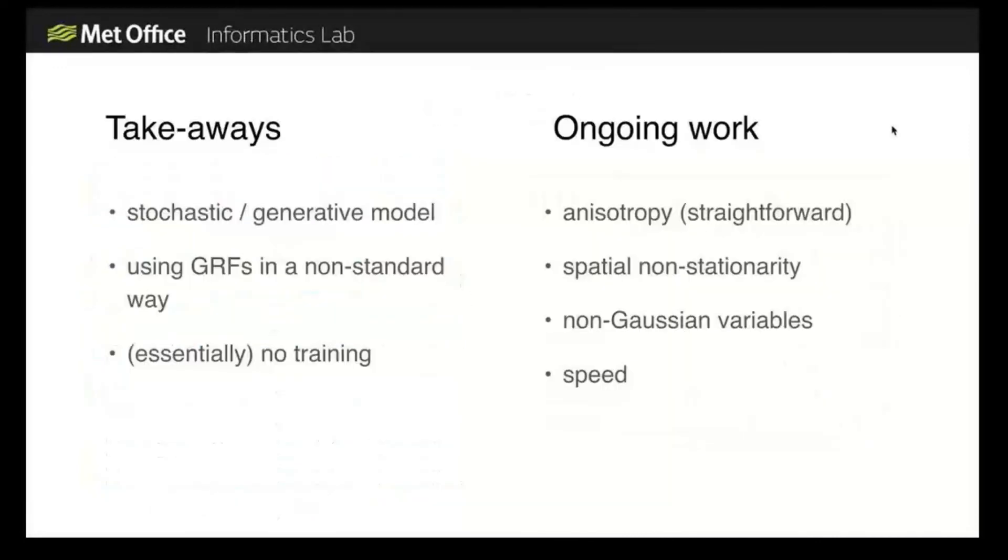This is definitely a work in progress. But just to recap, it's a stochastic or generative model based on a probability distribution. It's using Gaussian random fields, which are a very established way of handling probability, although using them in a slightly non-standard way to do spatial averaging. It's pretty much a mathematical model that requires essentially no training, perhaps a bit to choose the hyperparameters of the model.